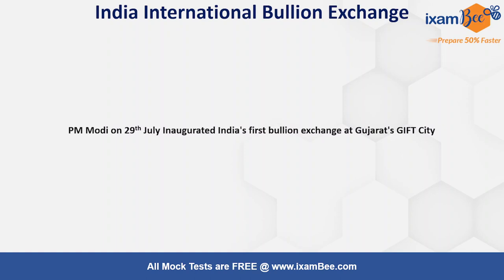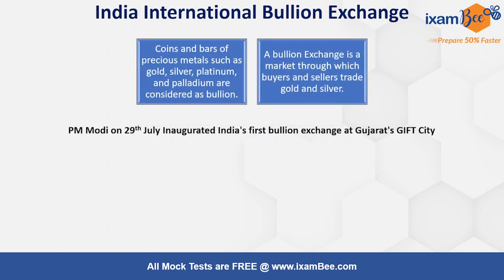The first question is: what does 'bullion' mean? We have probably read about the India International Bullion Exchange but don't know the bullion meaning or context. Bullion means coins and bars of precious metals such as gold, silver, platinum, and palladium. Gold, silver, platinum, and palladium are examples of such precious metals which we also call bullion.